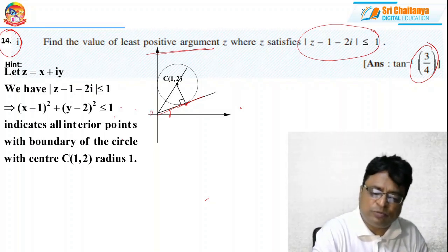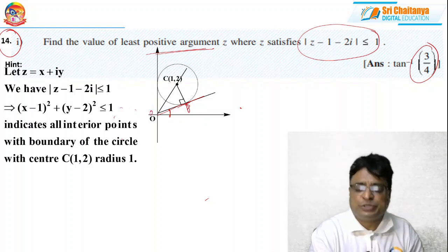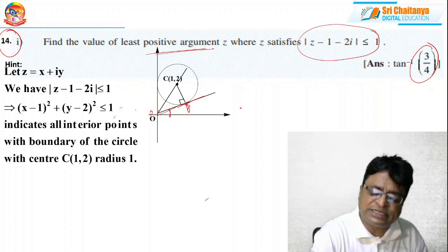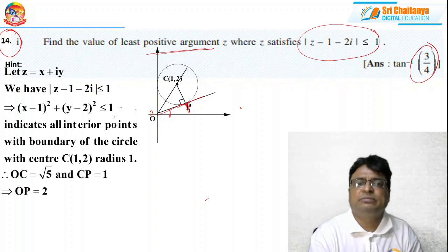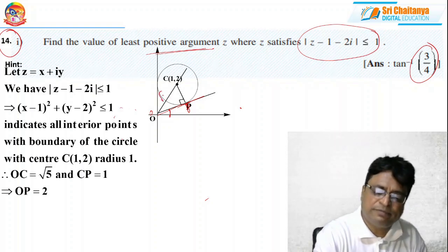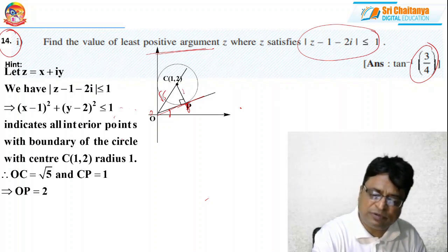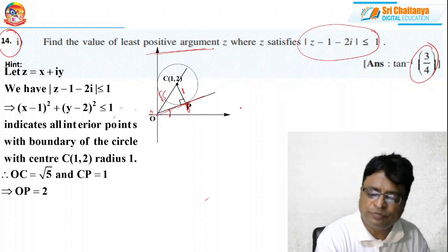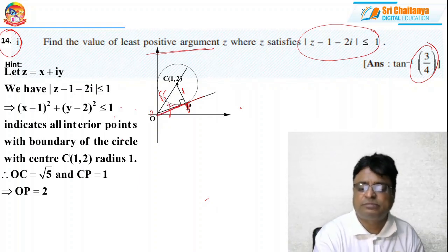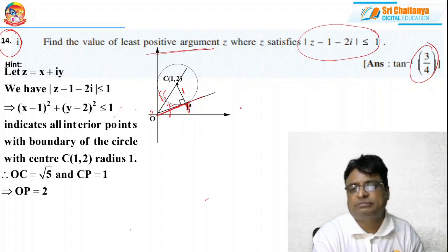Let O be the origin, P be the point of contact, and C be the center. OC = √5 (distance from origin to center (1,2)), CP = 1 (radius), and OP = √(OC² - CP²) = √(5-1) = 2. This is a right triangle since the tangent is perpendicular to the radius.